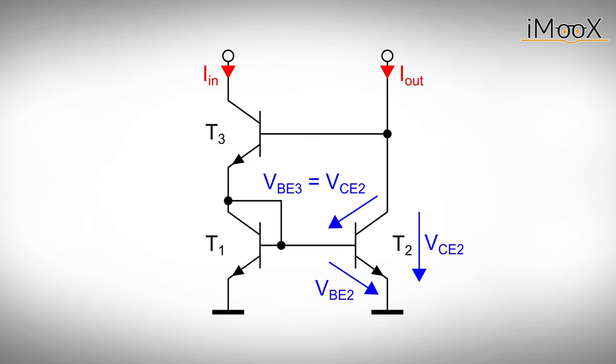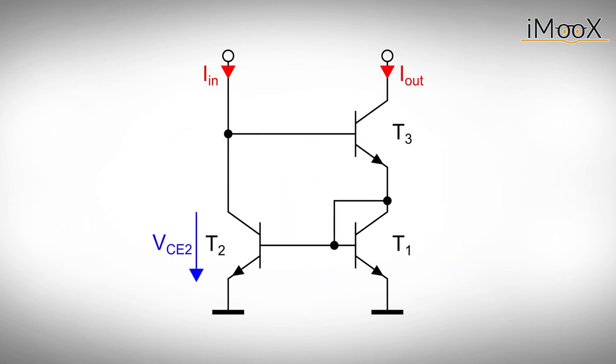Hence, the collector emitter voltage of T2 equals 2 VBE constantly. However, this circuit doesn't work because we try to force the input current into the turned-off transistor T3. But we don't give up easily and play around with this circuit. And once we swap input and output terminals, the circuit starts working. This circuit is known as the Wilson current mirror. A simple but smart circuit to generate a constant output current.